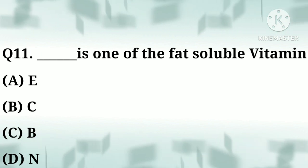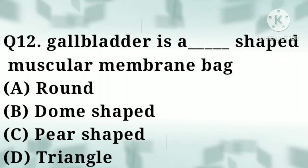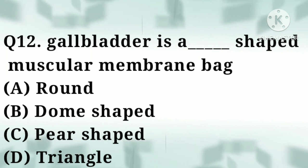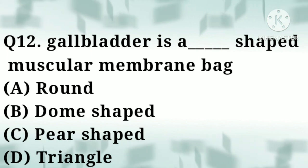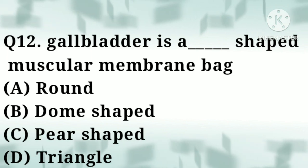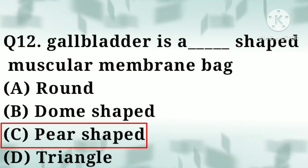Correct answer: option A, vitamin E. Question number twelve: the gallbladder is a blank pear-shaped muscular membrane bag — option A: round, option B: dome-shaped, option C: pear-shaped, option D: triangle. Correct answer: option C, pear-shaped.